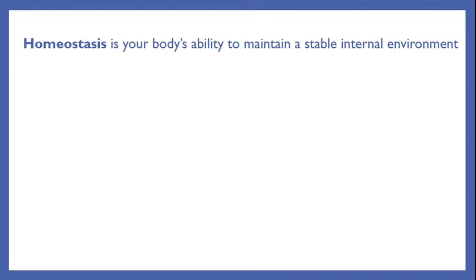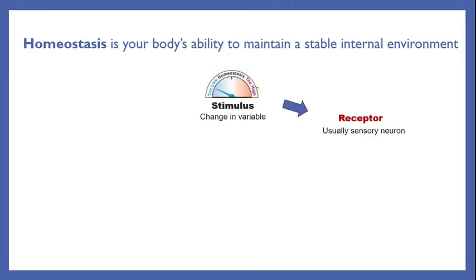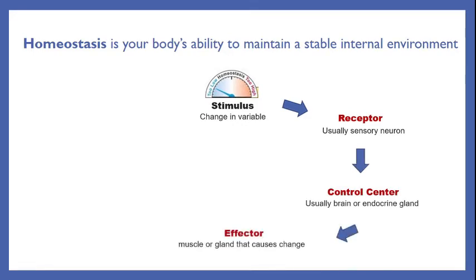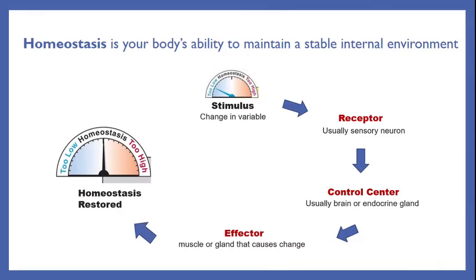Homeostasis is your body's ability to maintain a stable internal environment. When something happens, we call that a stimulus — it's a change in a variable. That change is picked up by a receptor, usually a sensory neuron. It carries the information to a control center, usually the brain, but it can also be an endocrine gland in certain cases. The control center decides what needs to be done to return the body to homeostasis and sends out a command to the effector — a muscle or a gland that can cause a change to bring that back. Hopefully, homeostasis is then restored. Your body works like this to sense, interpret, and effect a change, all to maintain that stable internal environment.